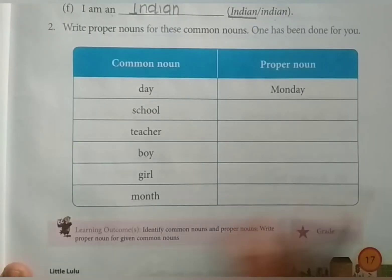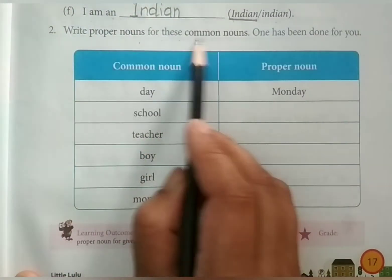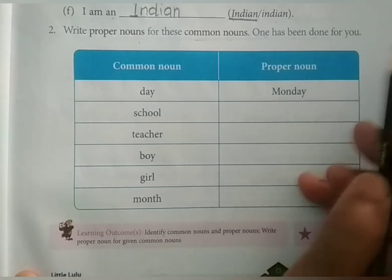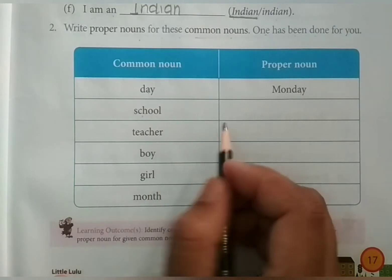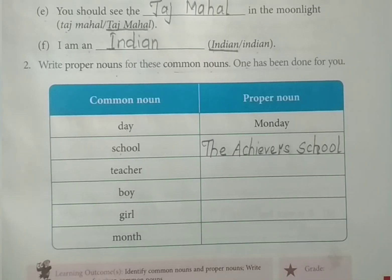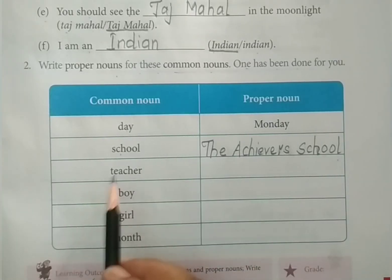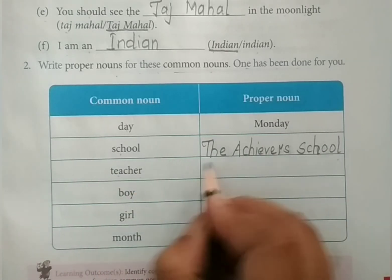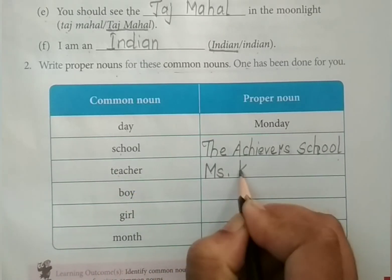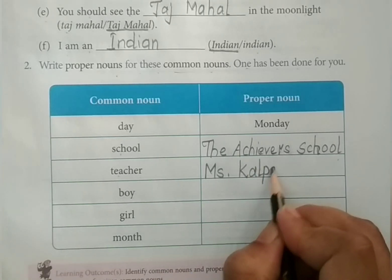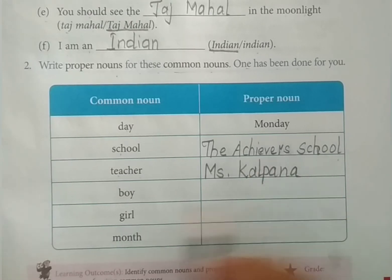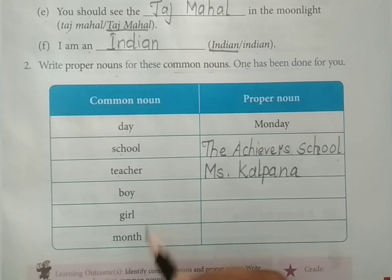Now write proper nouns for these common nouns, and one has been done for you. Day is Monday. Now school — so which school's name will you write? The Achiever School. Teacher — who is your teacher? Miss Kalpana is your teacher. Keep in mind, the first letter is always capital as it is a proper noun. Boy — now this I am going to leave for you. You have to complete it as homework.